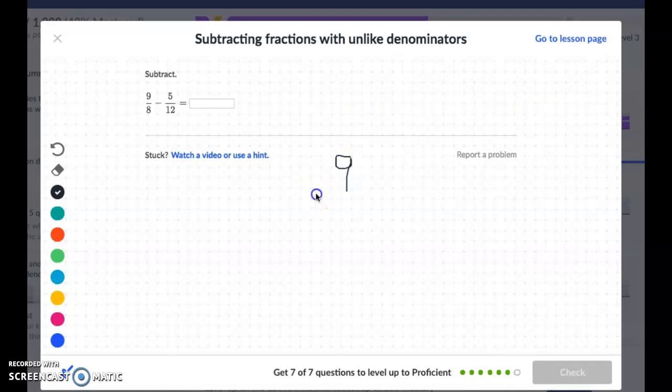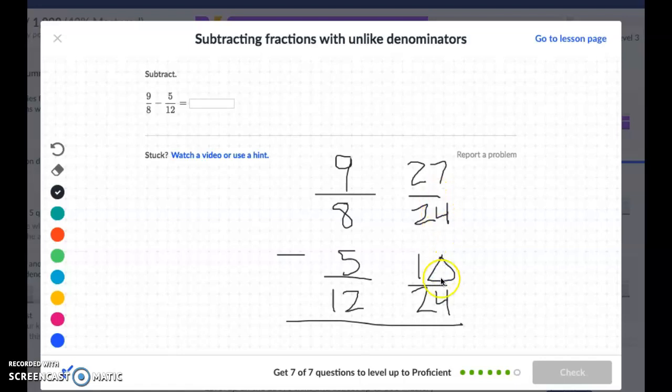Nine eighths minus five twelfths. And they gave us some big numbers again. Now there's definitely multiple ways you can do this. If you're really great in your math skills, you might notice that you can change these both into 24ths, because 8 times 3 is 24, so 9 times 3 is 27. And then 12 times 2 is 24, and 5 times 2 is 10. So you would notice that you can do both out of 24.